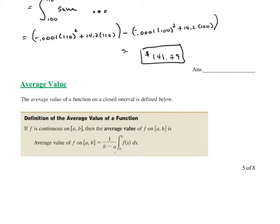The definite integral from a to b of f(x) dx is like adding up all the y-values. To find the average, we divide by the number of x-values, which is b minus a. So the average value of a function is (1 over b minus a) times the definite integral from a to b of f(x) dx. We'll apply this formula in the next example.